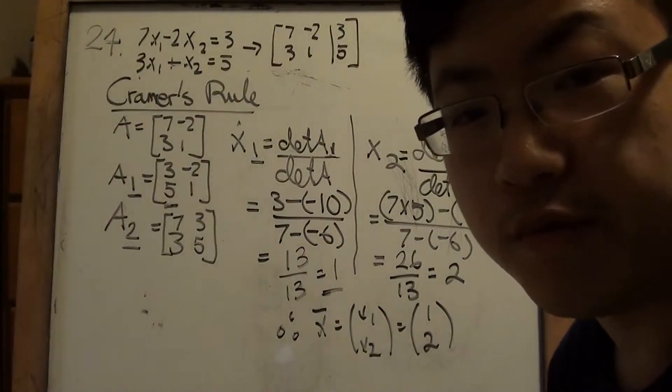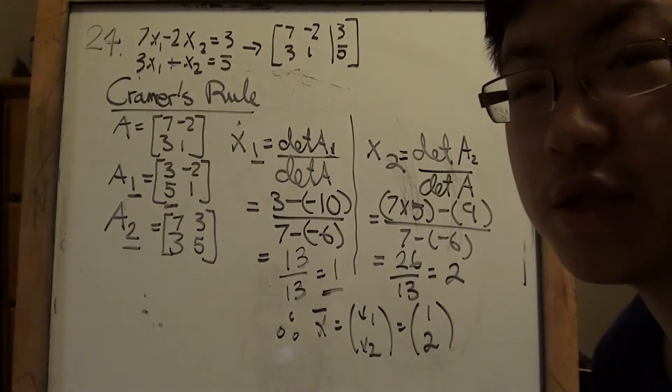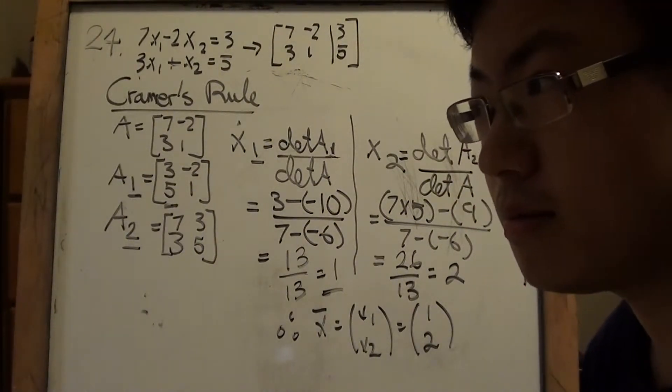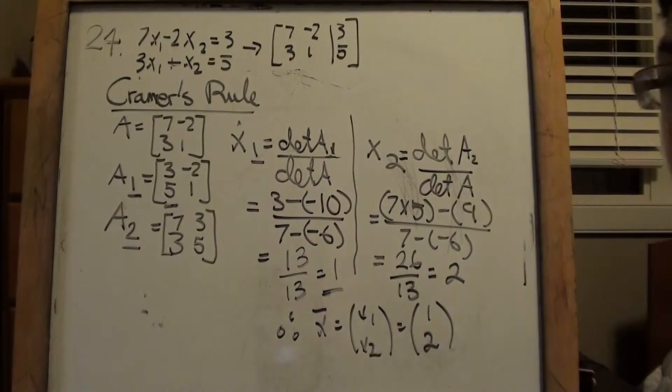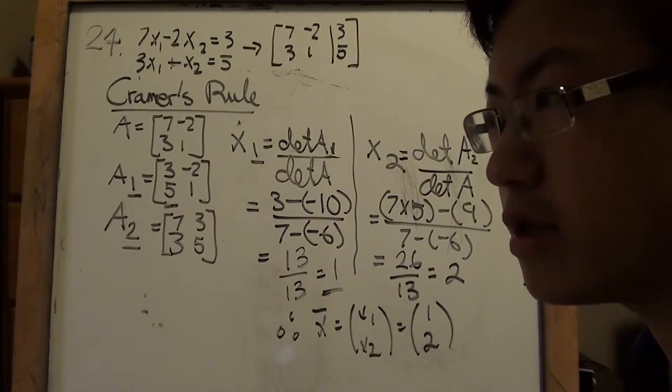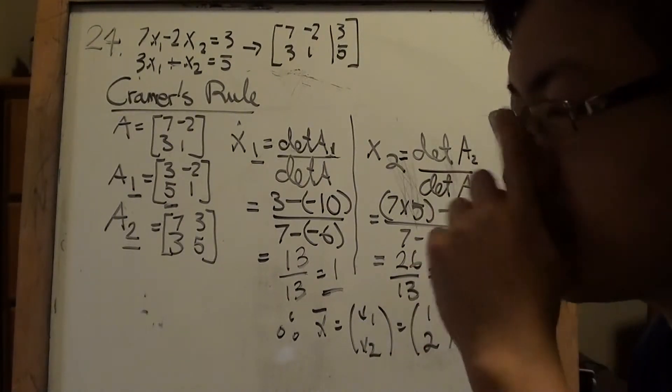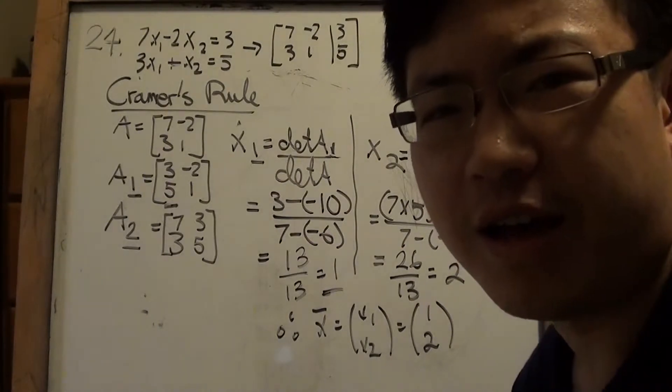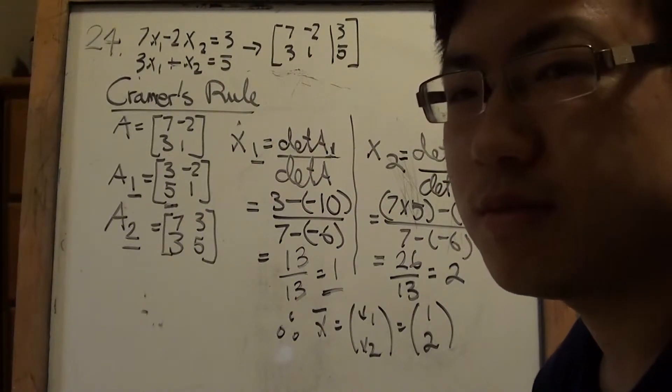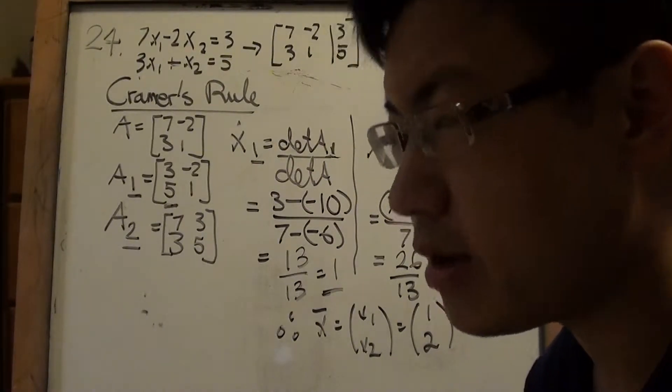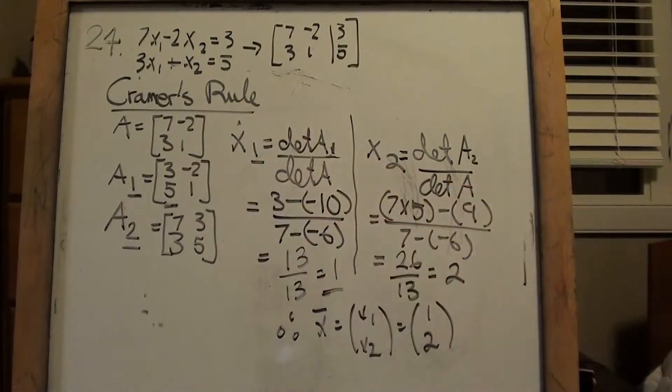All right, so this is Part B for Linear Algebra 2.3. Finally we get to do what 2.3 has been about, or the main story of 2.3, Cramer's Rule.